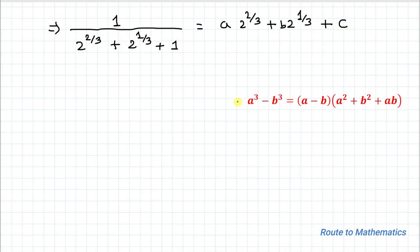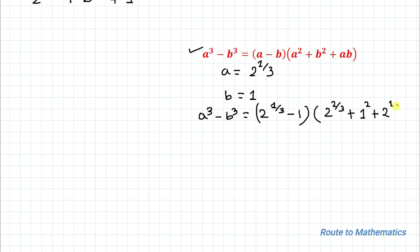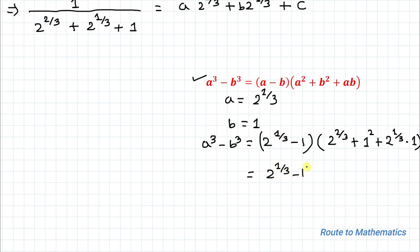In the next step we are going to apply an algebraic identity: a cubed minus b cubed equals (a minus b)(a squared plus b squared plus ab). If we take a equals 2 to the power 1 by 3 and b equals 1, then a cubed minus b cubed gives us (2 to the power 1 by 3 minus 1) multiplied with (2 to the power 2 by 3 plus 1 plus 2 to the power 1 by 3). So the factor (2 to the power 1 by 3 minus 1) can be written with denominator (2 to the power 2 by 3 plus 2 to the power 1 by 3 plus 1).